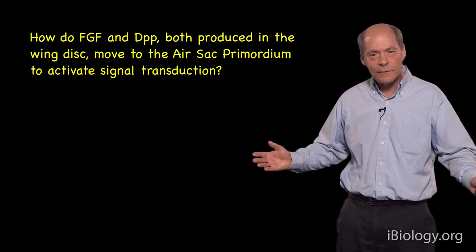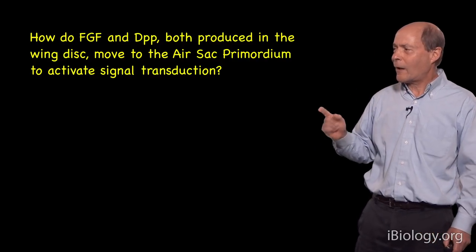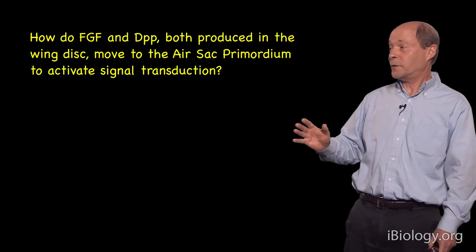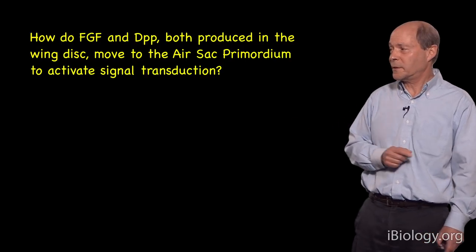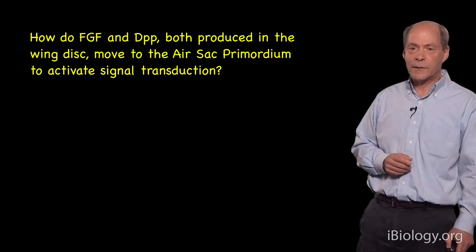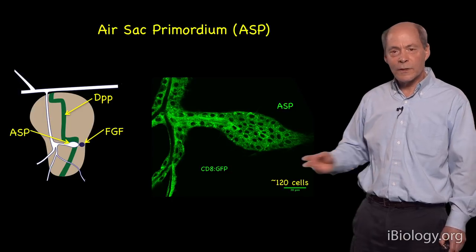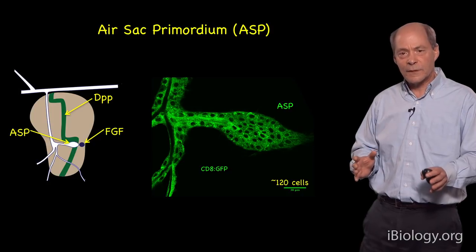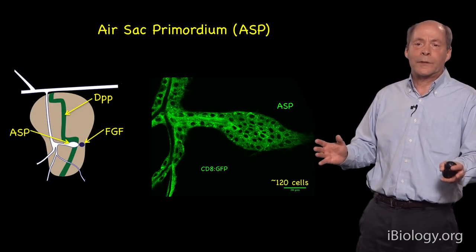The question we want to address is: how do FGF and DPP, both produced in the wing disc, move to the air sac primordium to activate signal transduction? I'll show you a slide giving you a sense, at cellular resolution, of what the air sac primordium is.